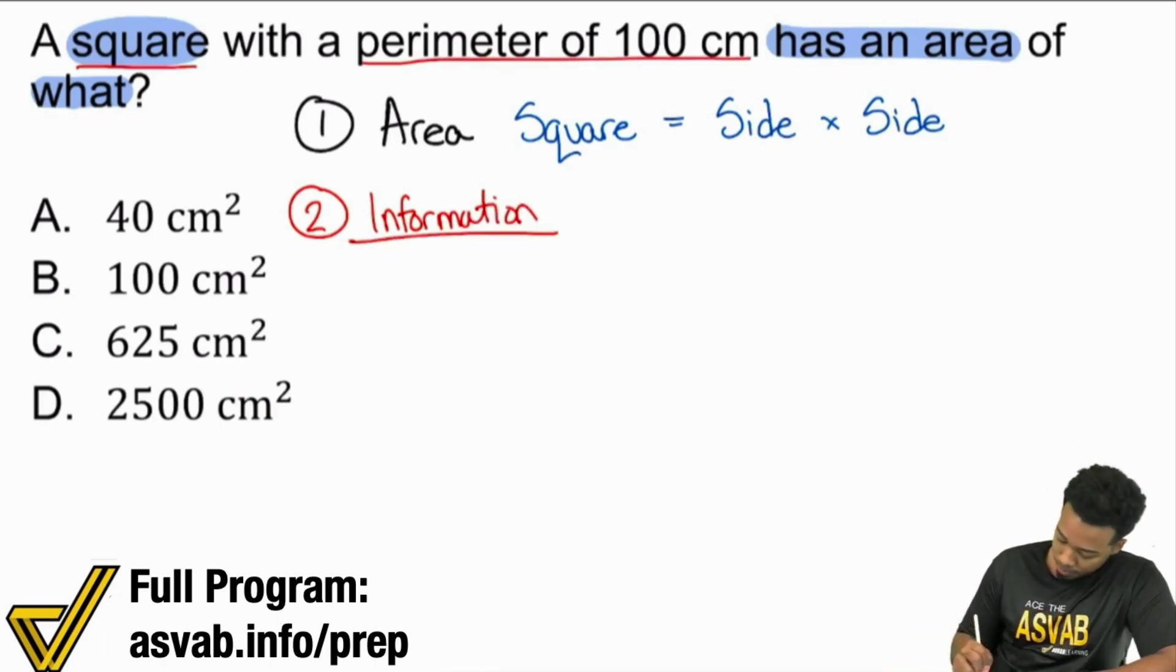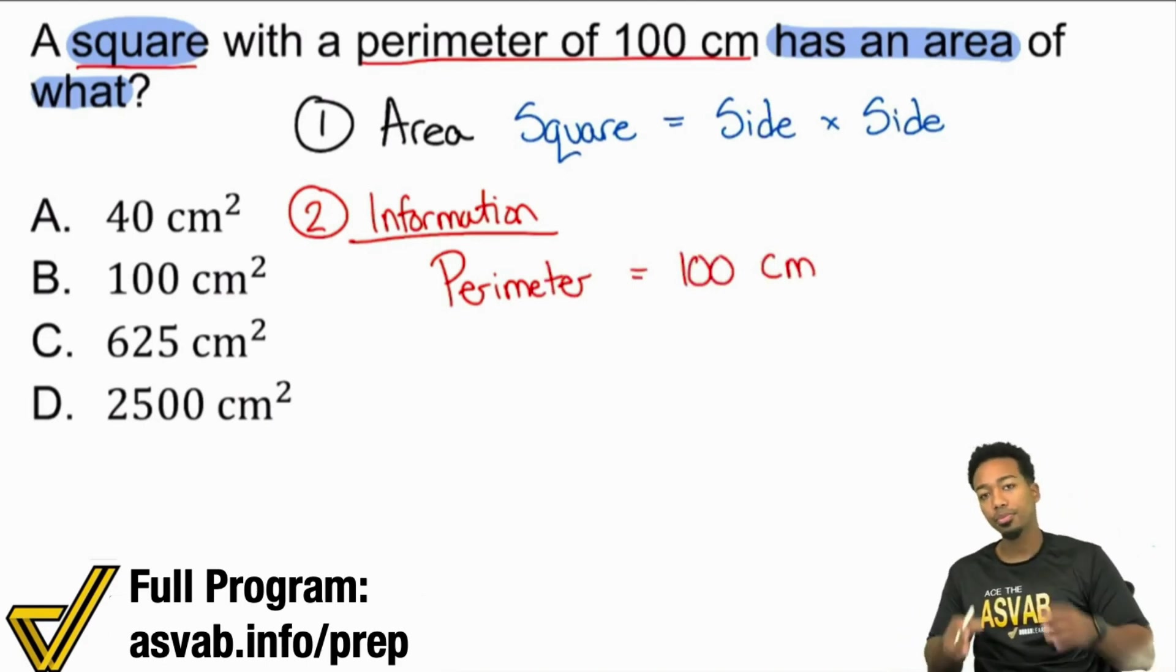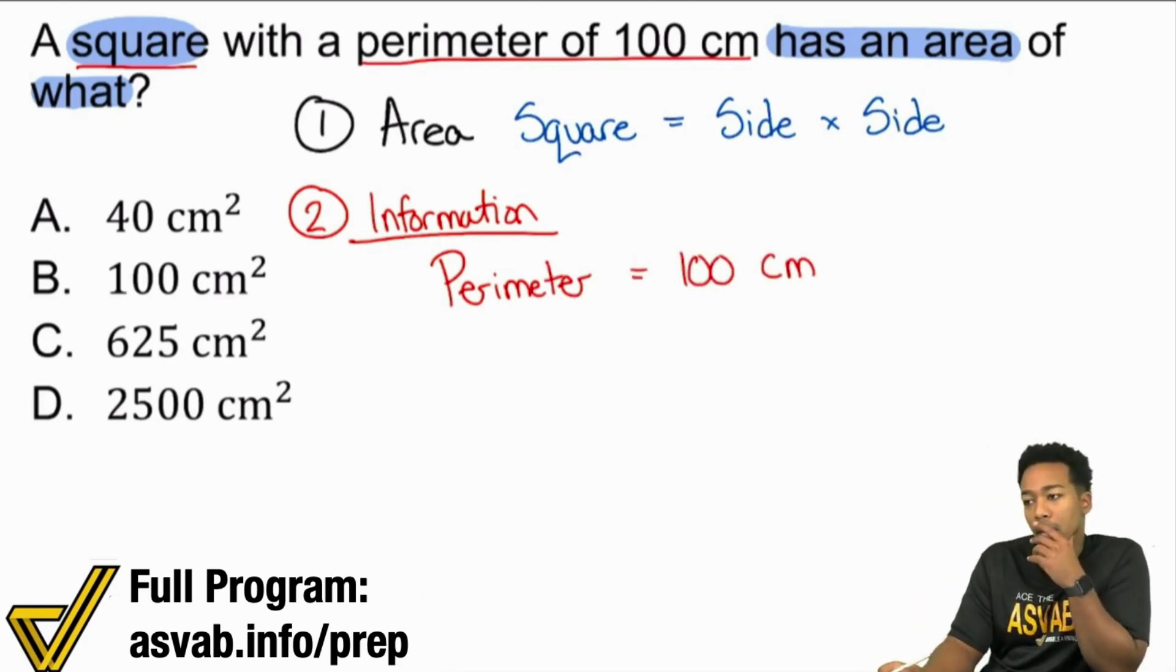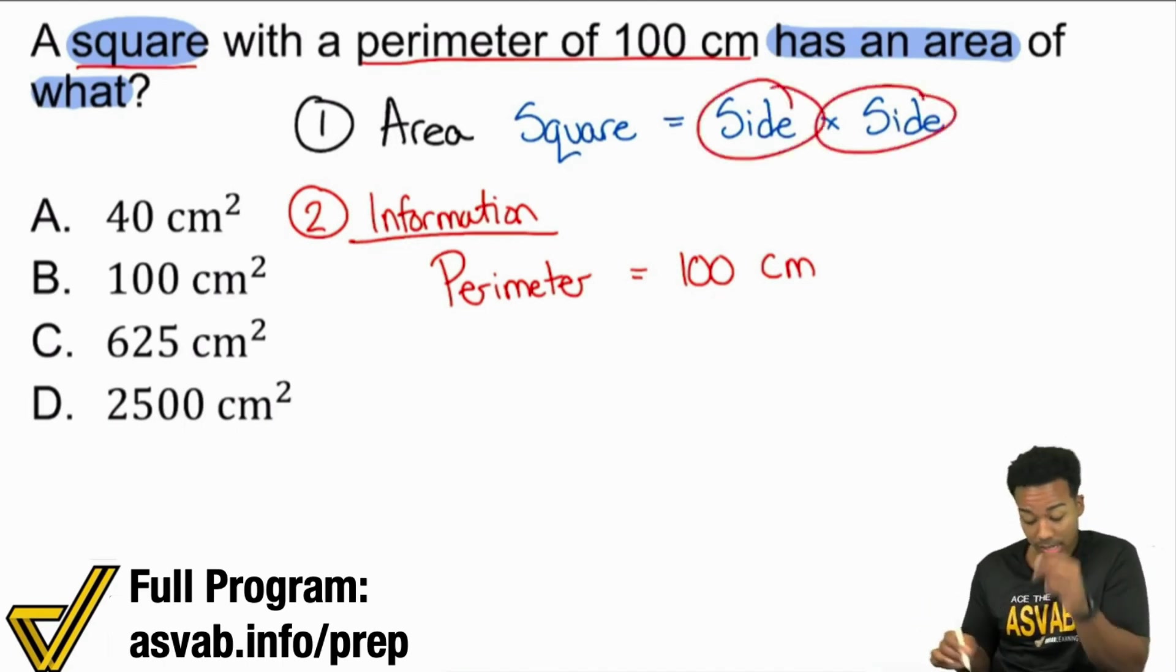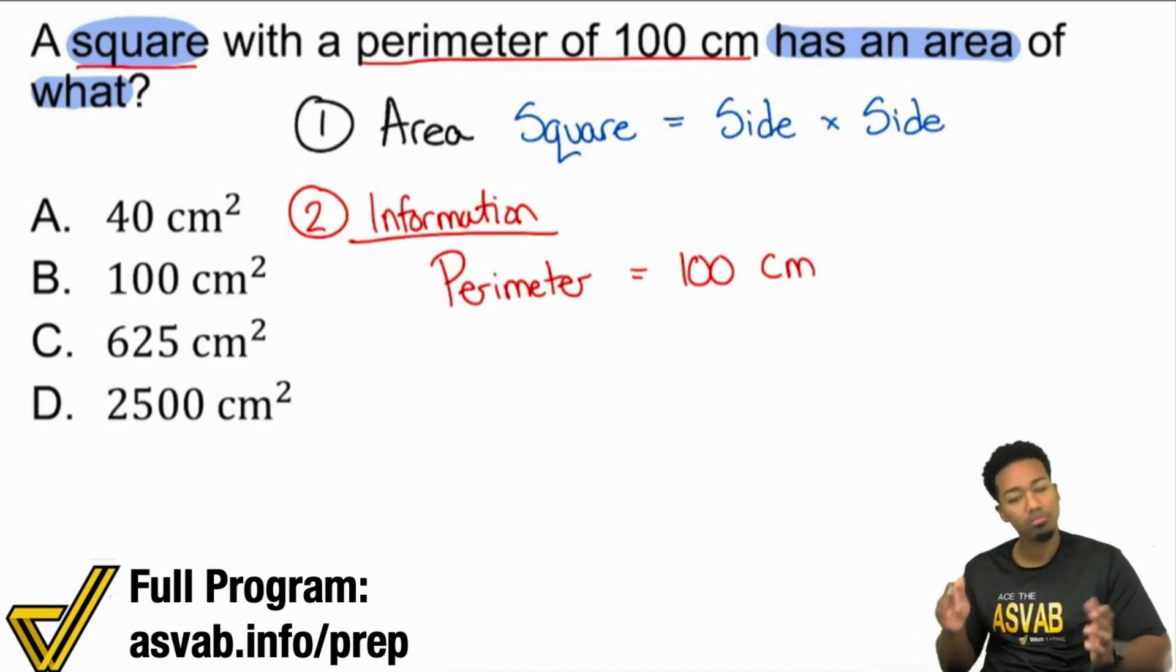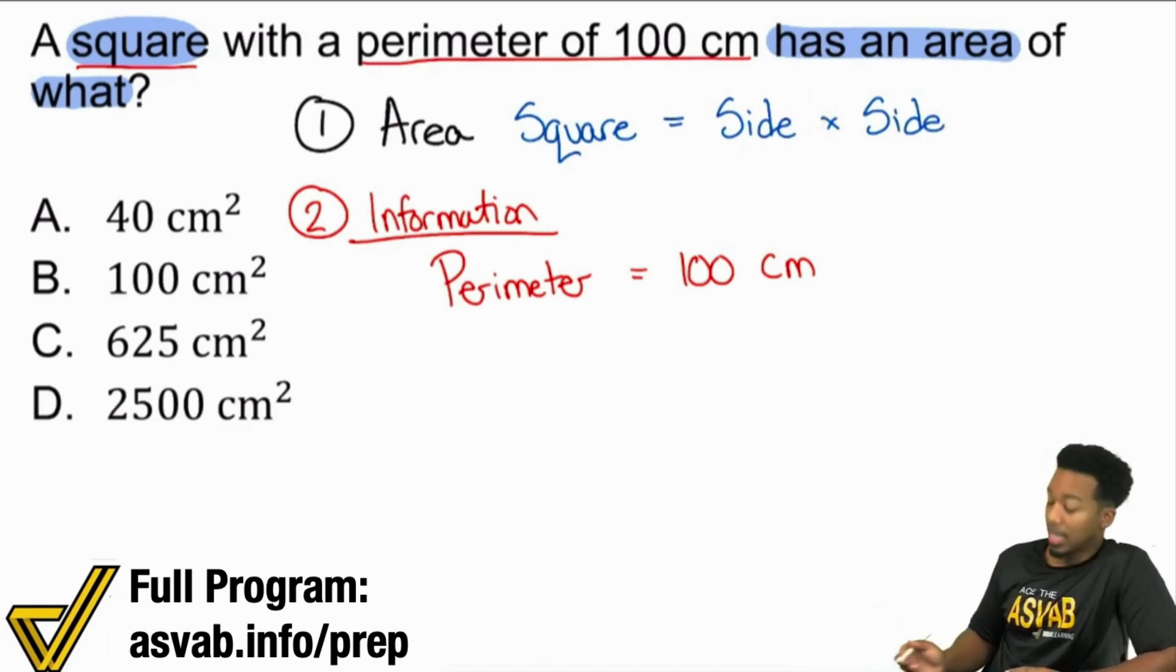Okay, sounds good. Perimeter, which is different than area, the perimeter equals 100 centimeters. So, I'm going to ask myself real quick. Do I have the side given to me? Because again, I just need the side. I just need the side. Is that given to me? No. They didn't say side directly. But, is there something about the perimeter that will give me the side?